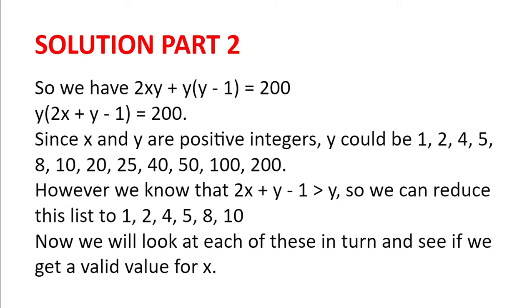However, because 2x plus y minus one is greater than y — since 2x is at least 2 — we can reduce this list to y being 1, 2, 4, 5, 8, or 10. And we will look at each of these values in turn to see if we get a valid value for x.